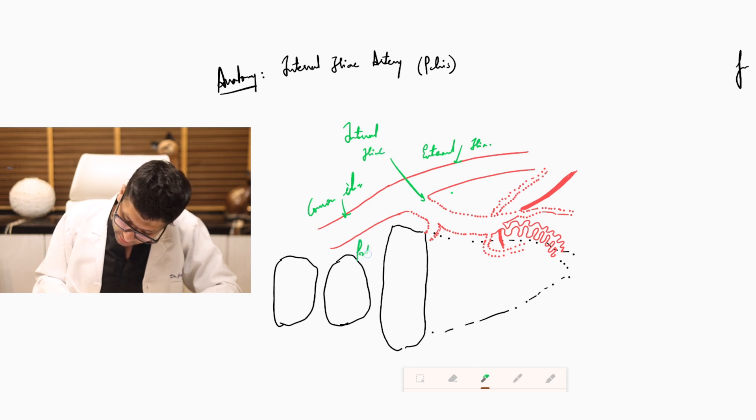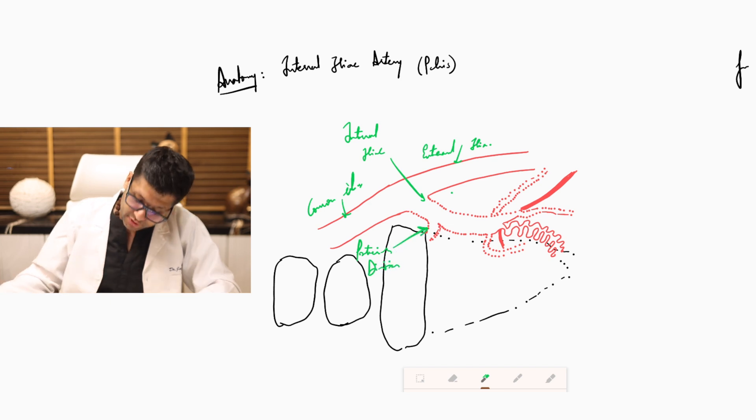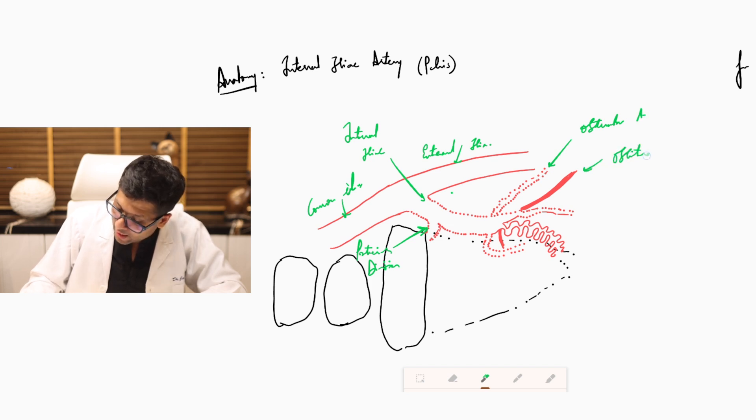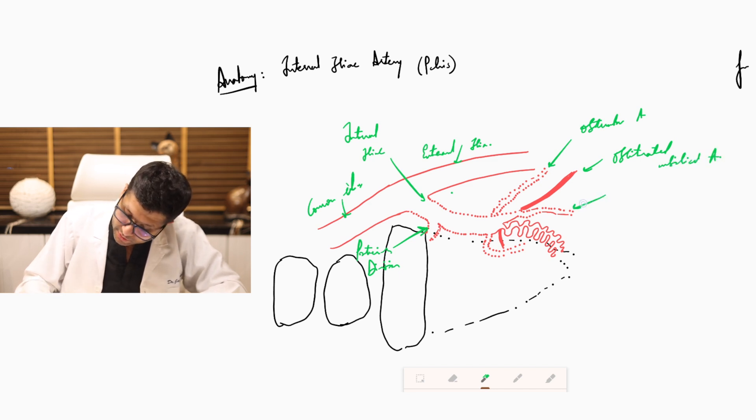This is the posterior division which escapes the pelvis. This is your important obturator artery. This is your obliterated umbilical artery. You will see this anatomy beautifully in applied anatomy sessions.